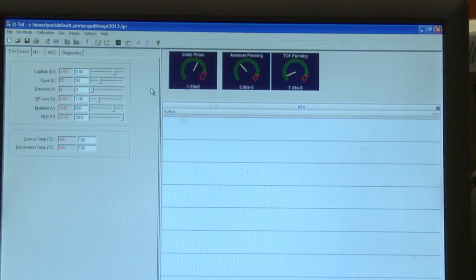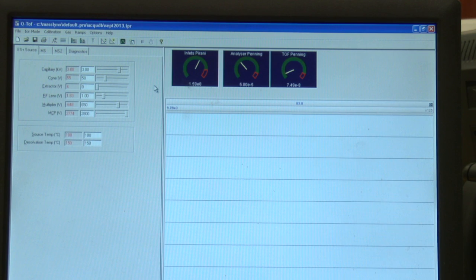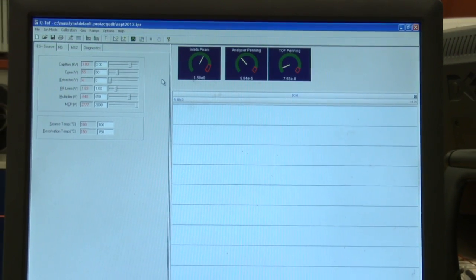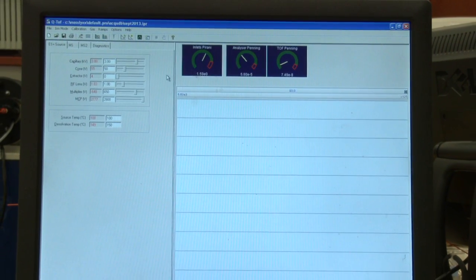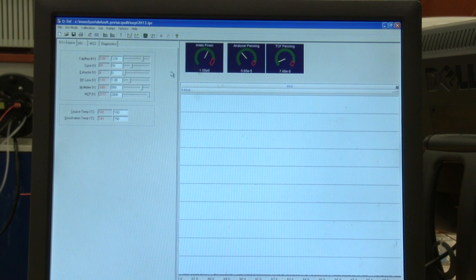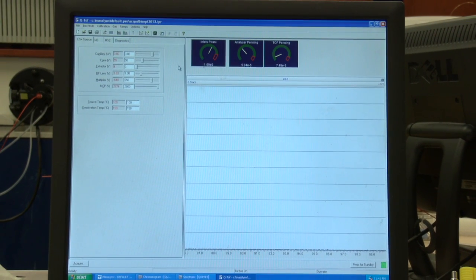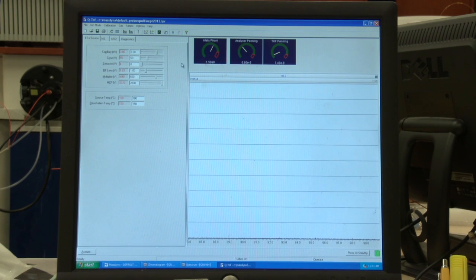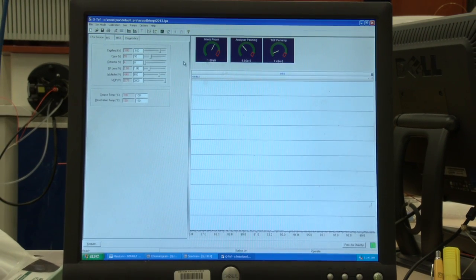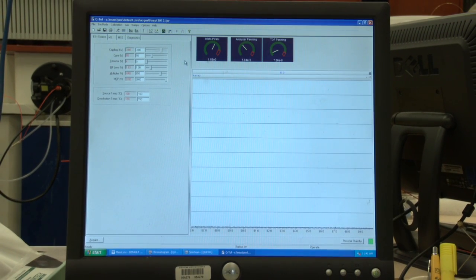Each manufacturer has their own brand of software for each instrument. Here you can see the voltages associated with the source, the detector voltages, and the source temperature controls. Adjusting the source voltages and temperatures, and also adjusting gas pressures, are all parameters that will need to be optimized to produce the best ionizing conditions for individual molecules.